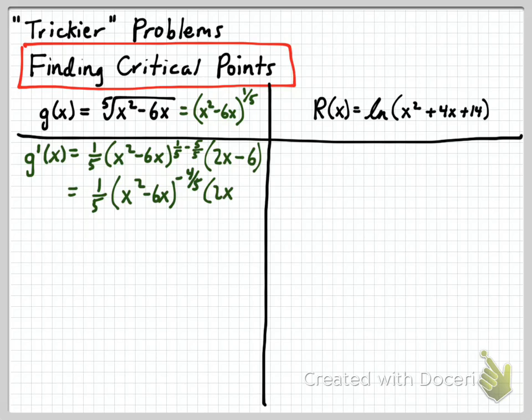And that gets multiplied by 2x minus 6. And I want to rewrite this as well in terms of a fraction so that it's much easier for me to see when g prime is equal to 0 and when g prime doesn't exist. So I want to put 2x minus 6 in my numerator, and in my denominator we want to write 5 times the x squared minus 6x, and that's to the positive 4 over 5.